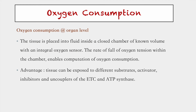For organ-level oxygen consumption, this measures oxygen blood flow and oxygen content within the arterial supply and venous drainage of a given organ. The tissue to be measured is placed in a fluid inside a closed chamber of known volume with an integral oxygen sensor. The rate of fall of oxygen tension within the chamber enables the calculation of oxygen consumption. One advantage of this technique is that tissue can be exposed to different substrates, activators, or inhibitors of the electron transport chain.